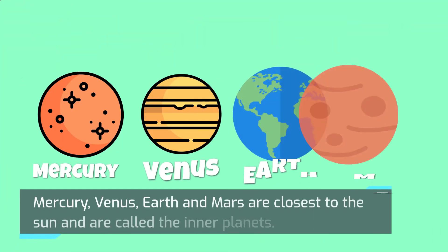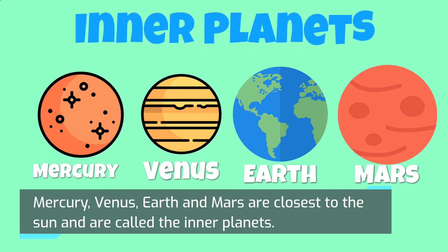Mercury, Venus, Earth, and Mars are closest to the Sun and are called the inner planets.